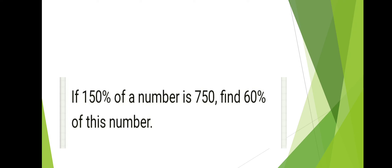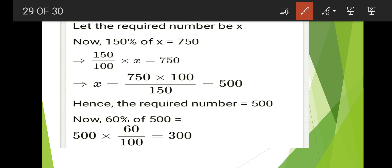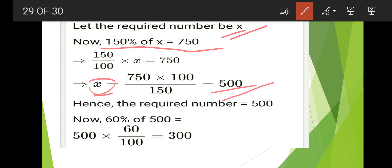Next: if 150 percent of a number is 750, find 60 percent of this number. Let the number be x. So 150 percent of x equals 750. Solving gives x equals 500. Hence the required number is 500. Now 60 percent of 500 equals 300.